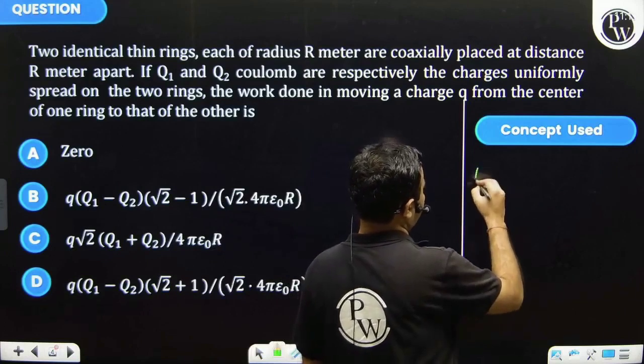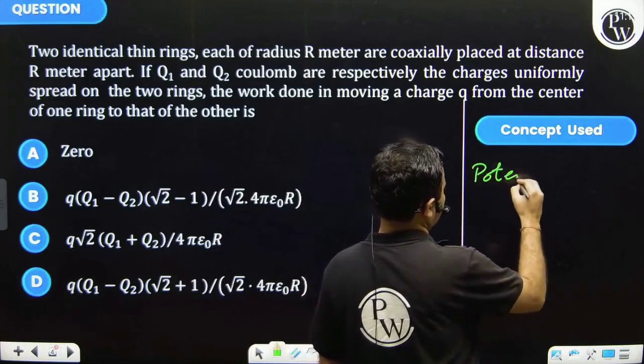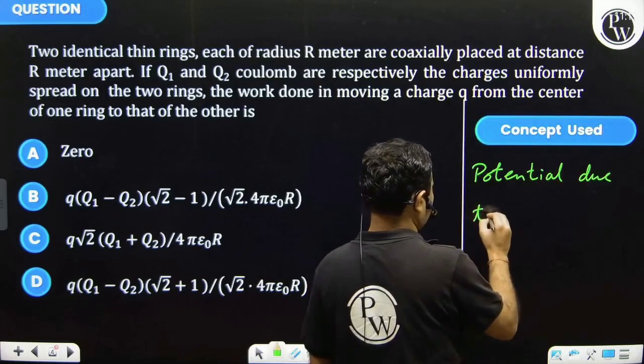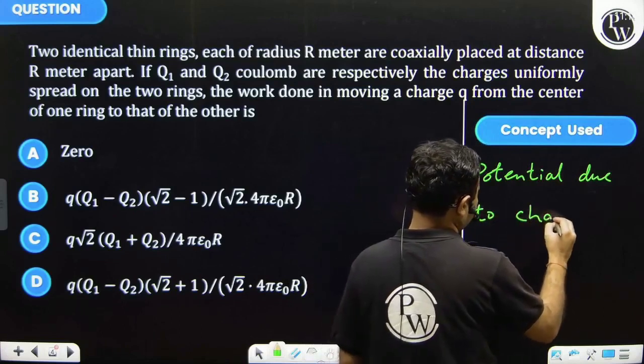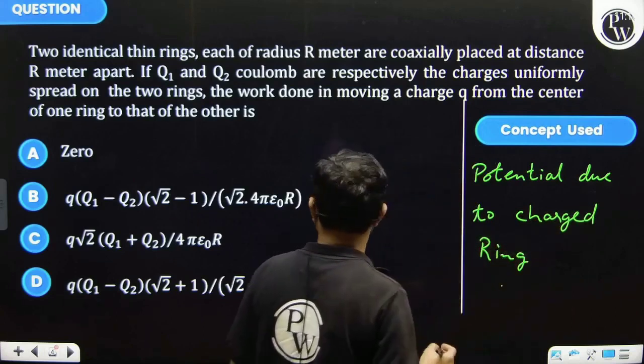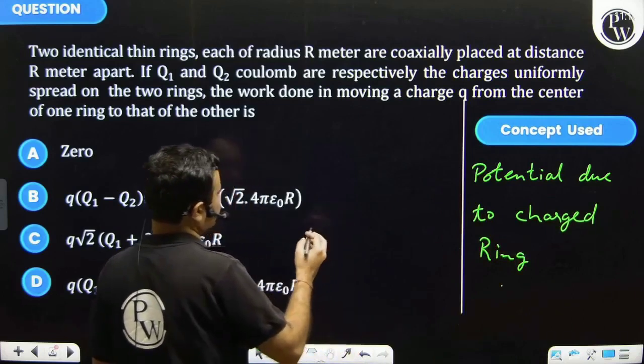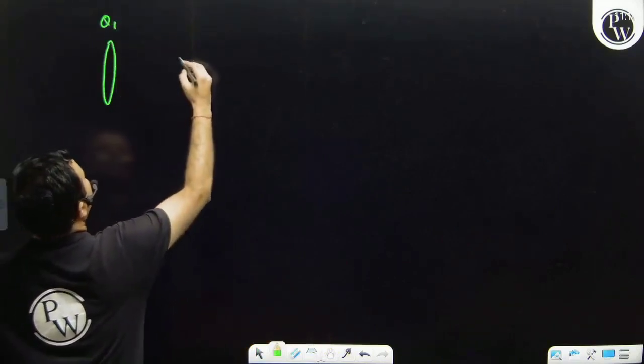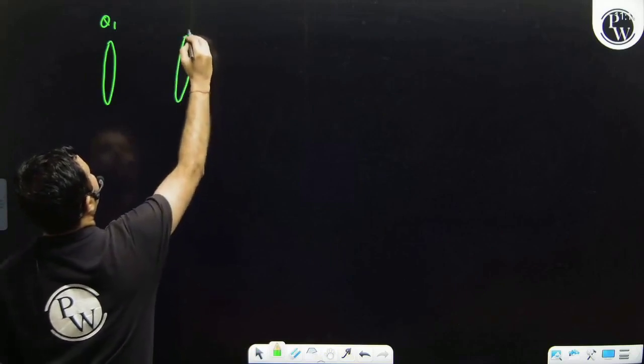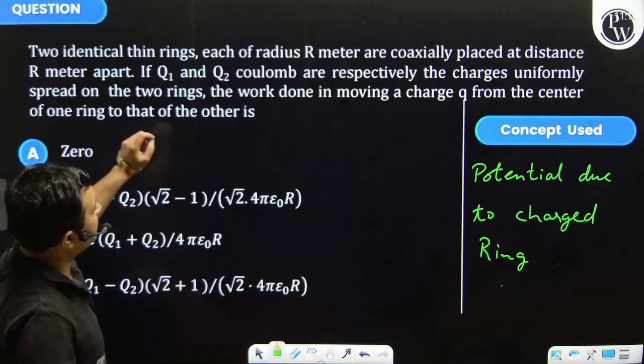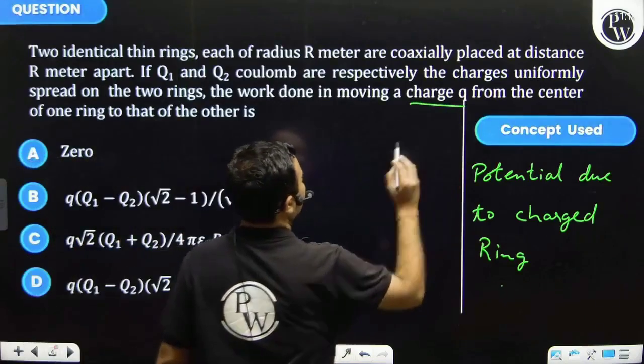So let's say there are two rings. Charge on one of the ring is Q1 and another ring is Q2, and we have to move a charge of charge small q from center of one ring to that of another.